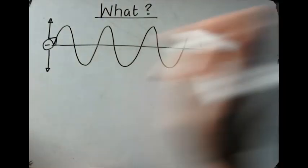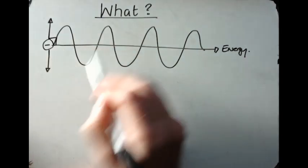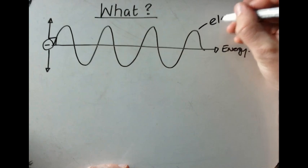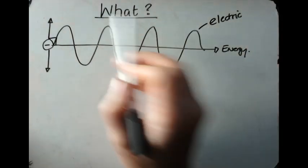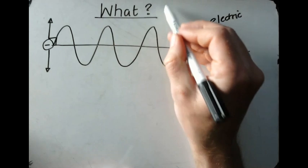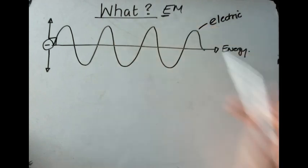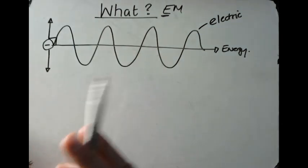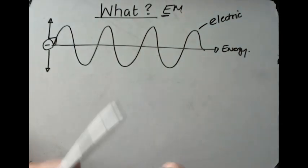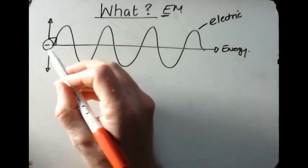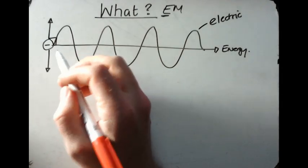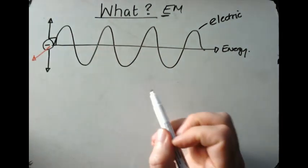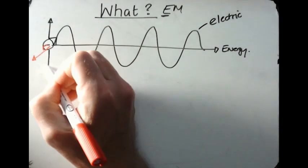So it's a transverse wave. Because we've got an electron oscillating, this part of the wave is the electric field. That's the E of EM — the electric. Now, whenever electricity flows, we also get magnetism, and we get a magnetic field that flows at 90 degrees — so at 90 degrees to this oscillation.